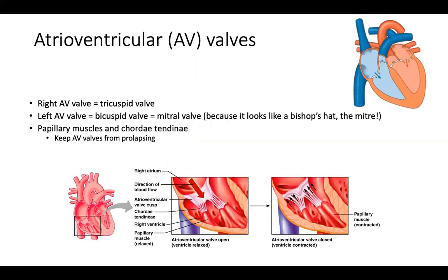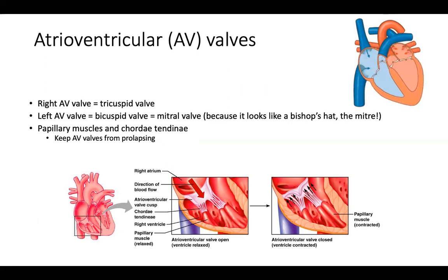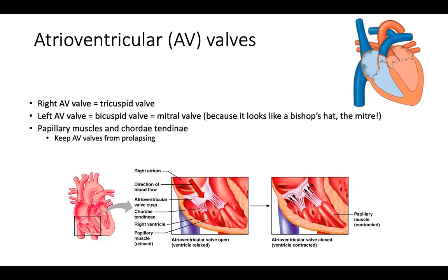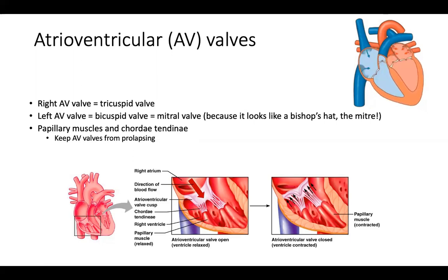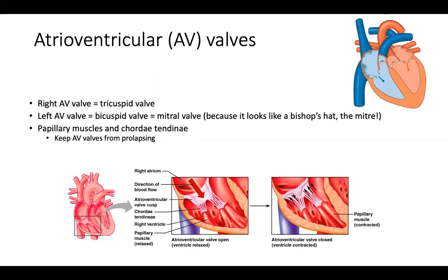Let's talk about the names of our valves. There are atrioventricular valves, or AV valves, which separate the atria from the ventricles. On the right, separating the right atrium from the right ventricle, is the tricuspid valve — it has three cusps to provide extra security preventing backflow, as the right side is more the volume side of the heart. On the left, the AV valve is called the bicuspid valve, with two cusps or leaflets. This is also called the mitral valve because it resembles a bishop's hat, called a mitre.